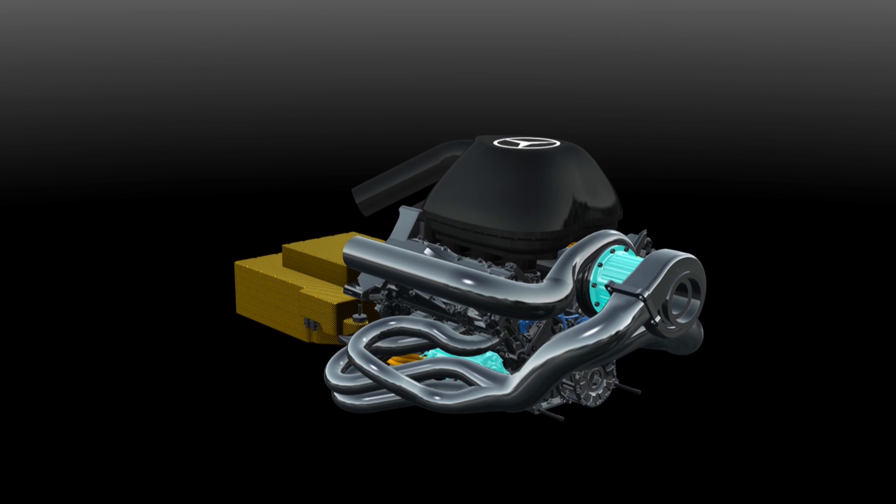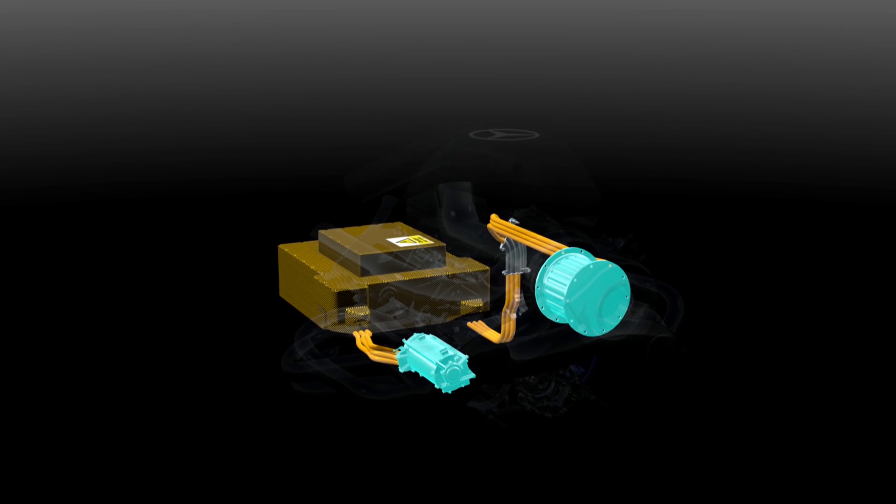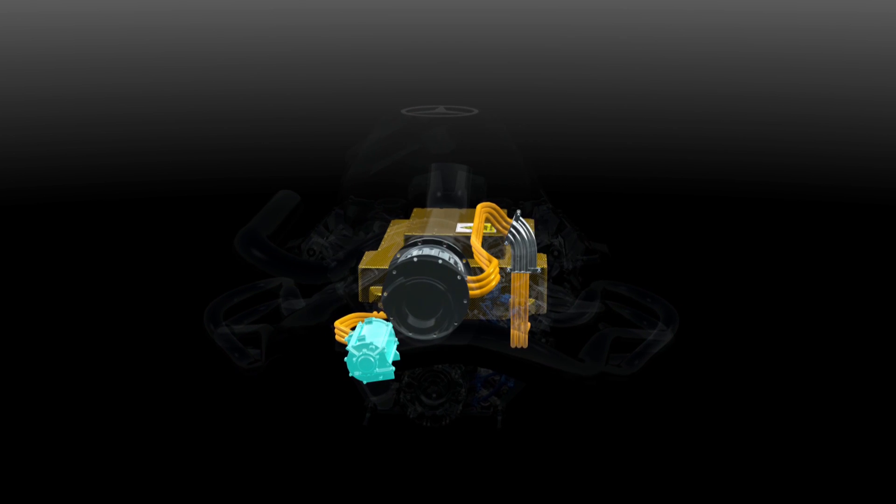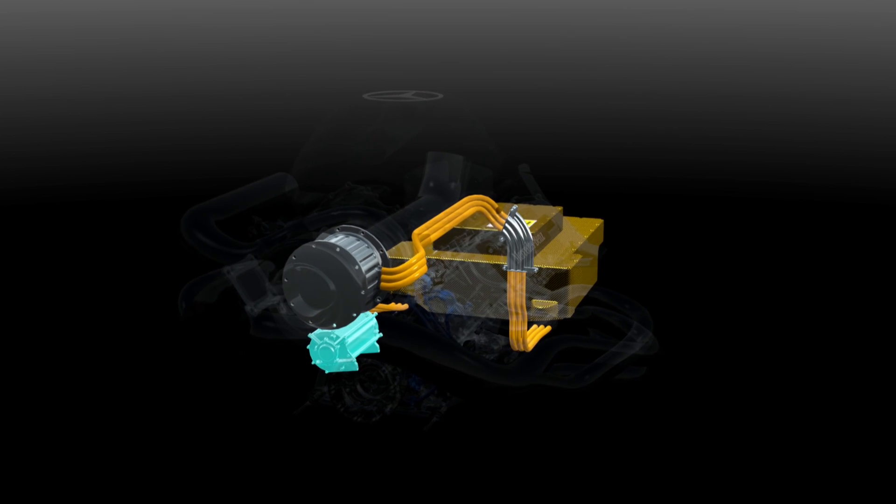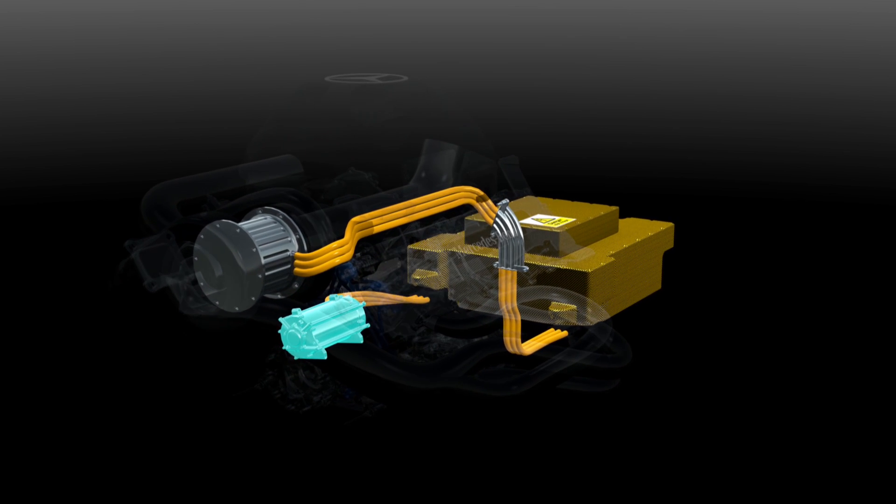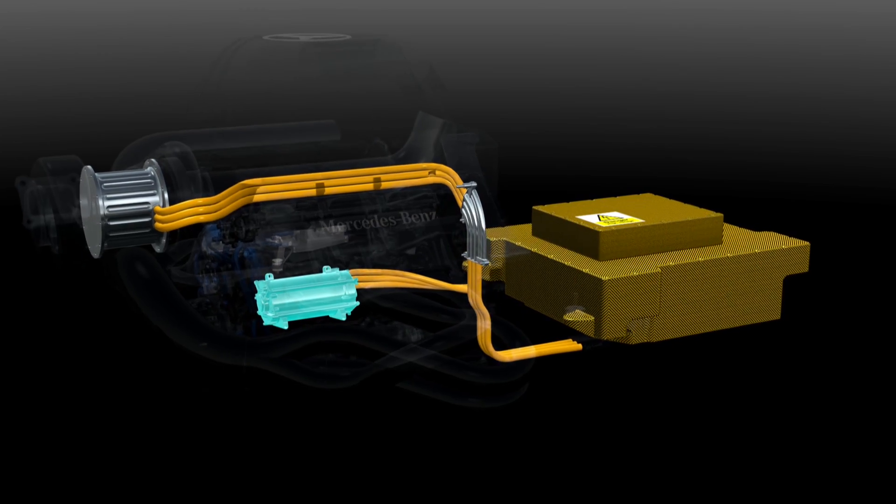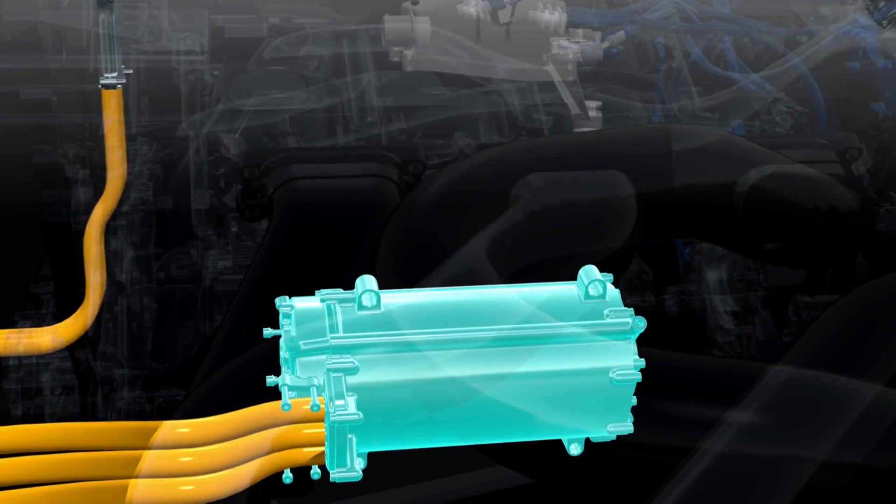The engine is boosted by a hybrid system made up of two electrical motor generators to recycle energy that would otherwise be lost. The MGU-K delivers up to 160 horsepower for 33 seconds per lap, equivalent to a Mercedes C220 CDI.